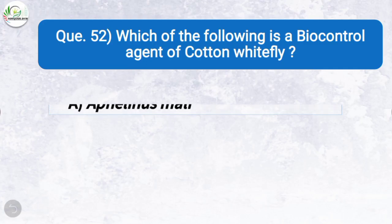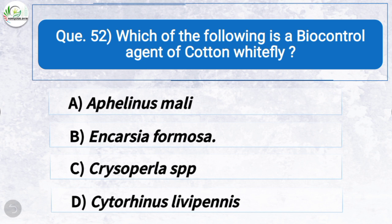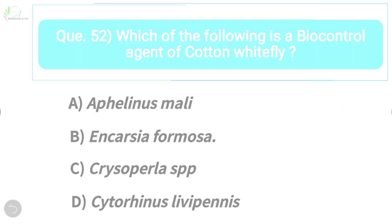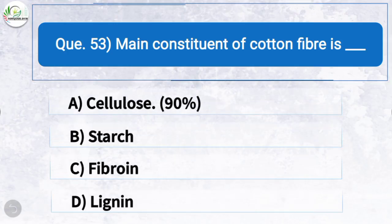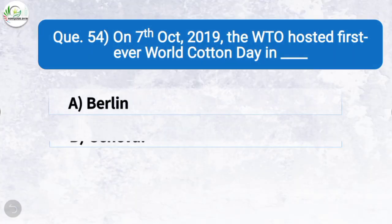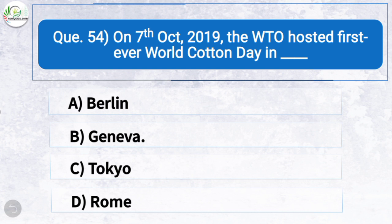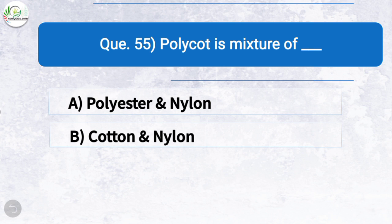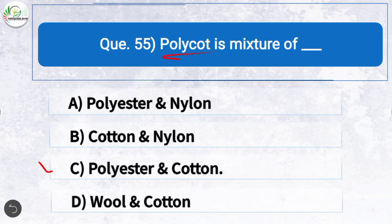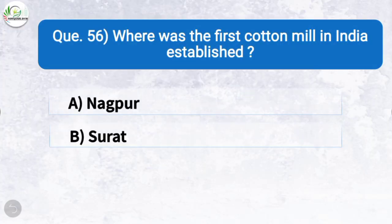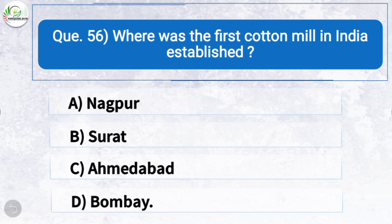Question fifty-two: Which of the following is a biocontrol agent of cotton whitefly? The correct answer is option B: Encarsia formosa. Question fifty-three: Main constituent of cotton fiber is — the correct answer is option A: cellulose, which is around 90 percent. Question fifty-four: On 7th October 2019, the WTO hosted the first ever World Cotton Day in — the correct answer is option B: Geneva. Question fifty-five: Polycott is a mixture of — the correct answer is option C: polyester and cotton.